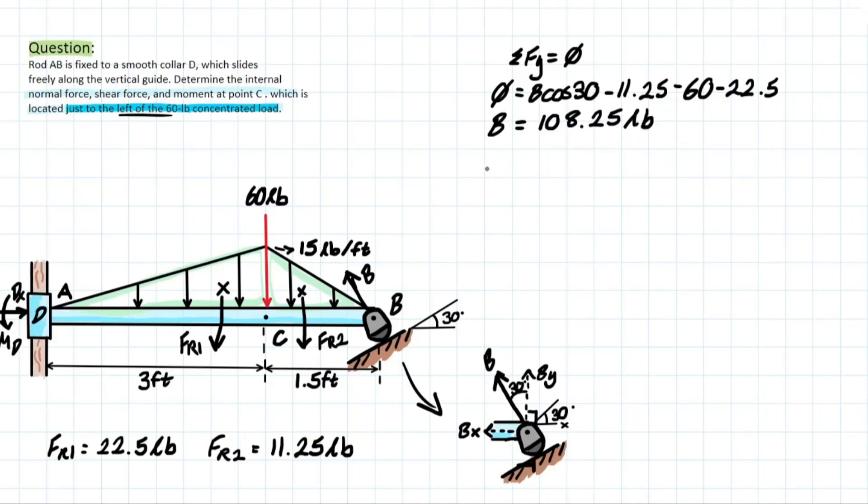So what do we do with this? Now we can take this and solve for BY, which is going to be this answer, 108.25, the cosine of 30 degrees. Why is that? Because it's the adjacent to the 30 degree angle. And we can also do the same with BX here, except instead of cosine, we're going to take the sine. And solving this, we're simply going to be left with 93.75 pounds and 54.13 pounds.